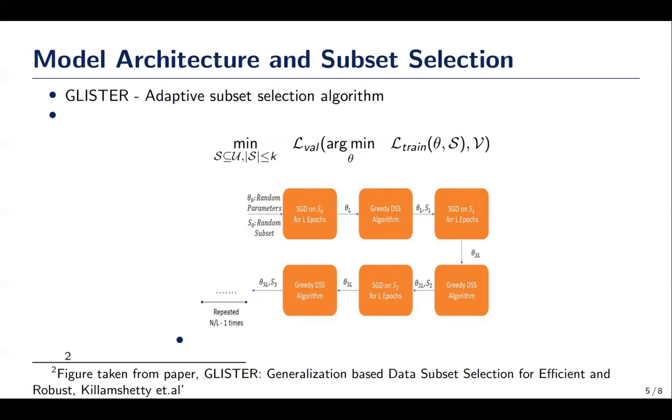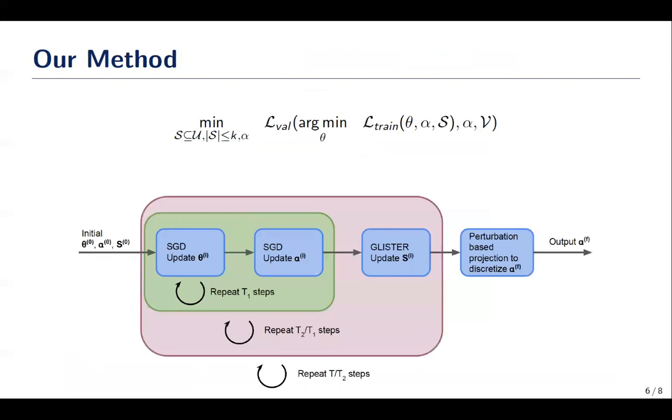In our method, we use DARTS-PT as the base model with adaptive subset selection using GLISTER algorithm. We define a bi-level optimization problem. Inner optimization is keeping the subset fixed and minimizing the training loss, and outer optimization minimizes validation loss by simultaneously optimizing for neural architecture and for subset selection, subset of the training data.